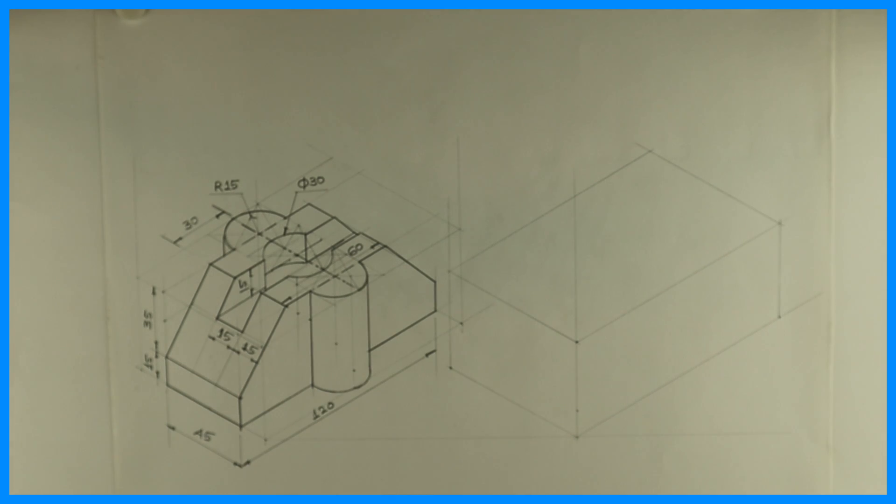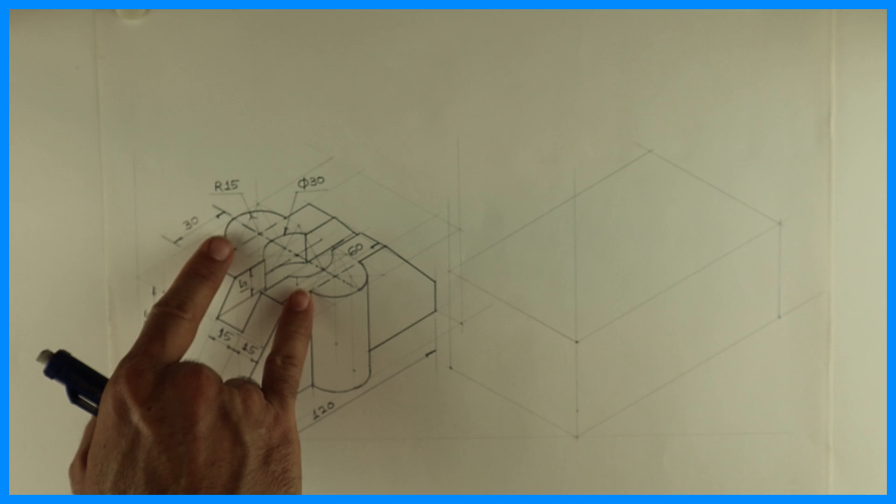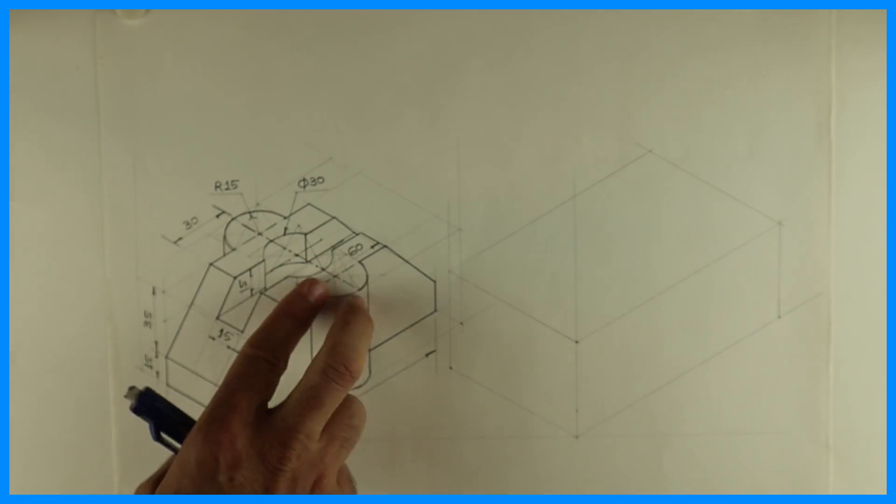Welcome to technical drawing. Today we are going to solve this sum in isometric. If you see, the length is 120, height is 50, width is 45. But this is not 45 - see, this is 45 and we need to add 15 on both sides, so it becomes 75.